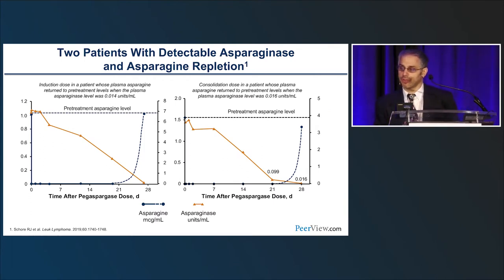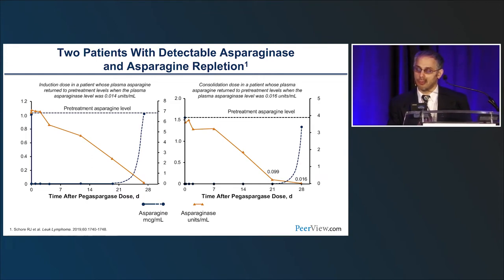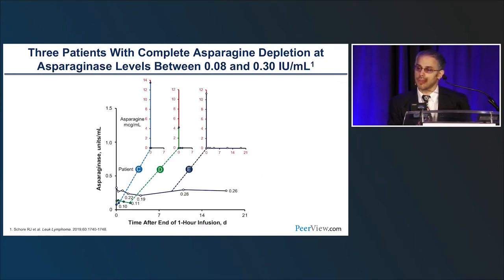Some interesting patients from this trial: two patients had detectable asparagine but still had asparagine repletion. When one patient had a level of 0.36 they were still depleted for asparagine; as the level dropped to 0.014, asparagine returned to baseline. Similarly, patients with levels between 0.08 and 0.3 — all below the FDA's 0.4 threshold — each had no detectable asparagine even at those lower levels.